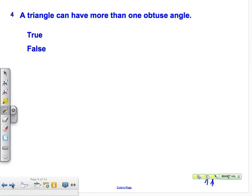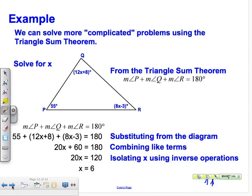Welcome back. Now with the Triangle Sum Theorem we can solve slightly more complicated problems by adding variables. We have angles 55, 12x plus 8, and 8x minus 3. We add them all up and set them equal to 180: 55 plus 12x plus 8 plus 8x minus 3 equals 180. Combining like terms gives 20x plus 60 equals 180, so 20x equals 120 and x equals 6.